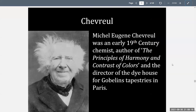Next up is Michel-Eugène Chevreul, an early 19th-century chemist, author of The Principles of Harmony and Contrast of Colors, and the director of the Dye House for Gobelin Tapestries in Paris. Gobelin was a tapestry maker that wove wool wall hangings for the wealthy and also dyed their own yarns. Chevreul was the chemist in charge of creating those dyes. By the 19th century, chemical compounds began to be used to create color, whereas prior to that, color was rendered from natural sources — plant, animal, or mineral.